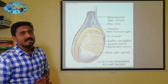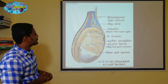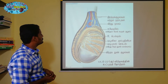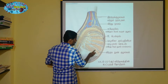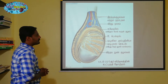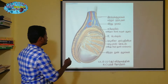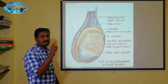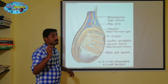The scrotum is a sack-like structure. This is a chamber, and this chamber is a tube-like structure. This tube-like structure is called Seminiferous Tubules.